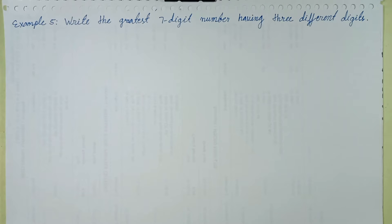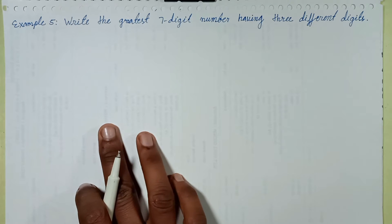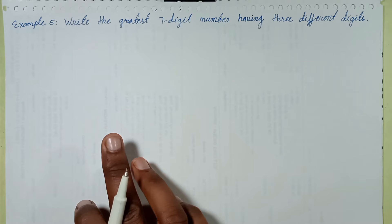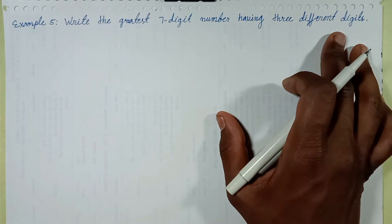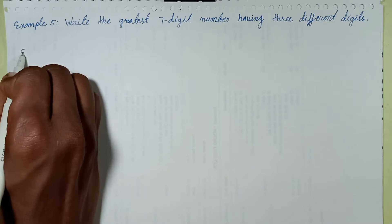Welcome back to this episode. This episode discusses example number five: write the greatest seven digit number having three different digits. This question belongs to R.D. Sharma Mathematics for Class 6. Let's solve it.